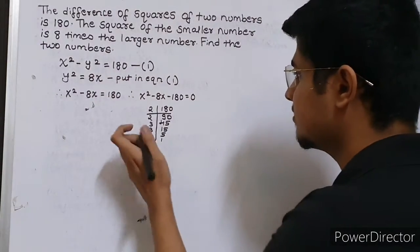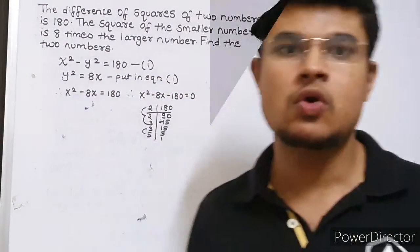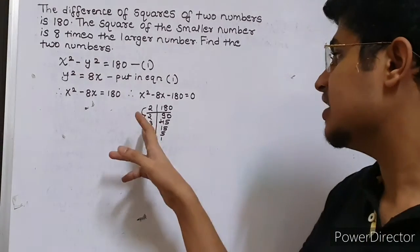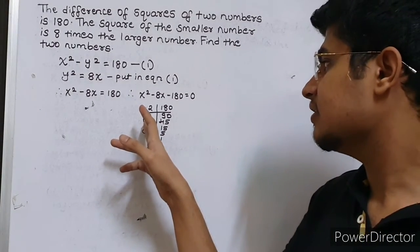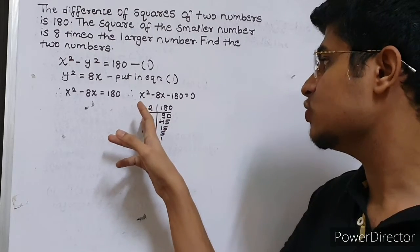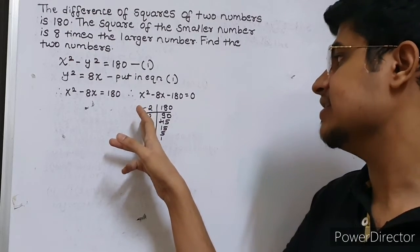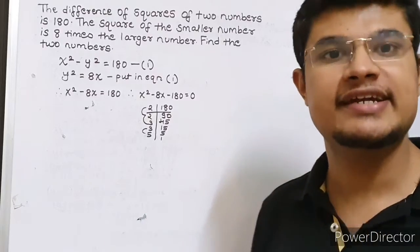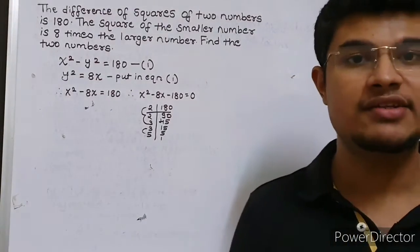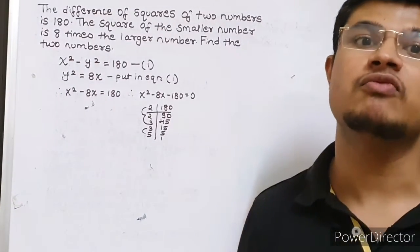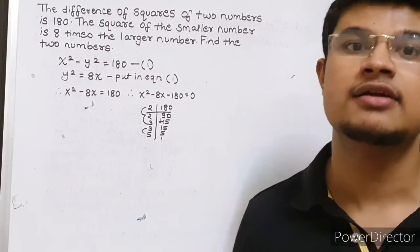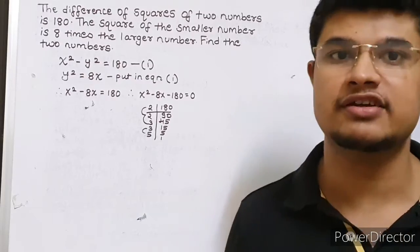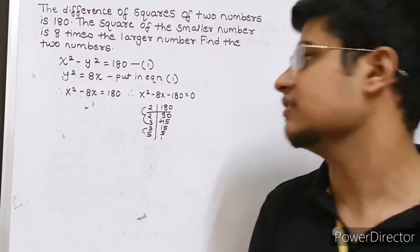We have to find our factors. So 3 into 3 is 9, and 9 into 2 is 18, and 5 into 2 is 10. So 18 and 10: minus 18 plus 10 will give me the sum as minus 8, and minus 18 into 10 will give me the product as minus 180. So I have got the factors.